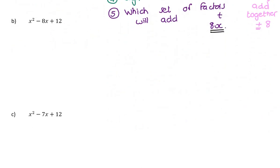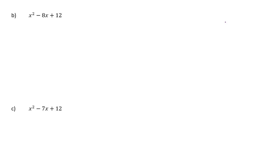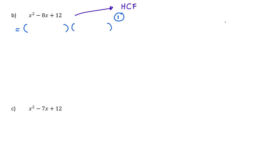I multiply out in my head to check: x squared minus 6x minus 2x gives minus 8x in the middle, and minus times minus is plus, so plus 12 at the end. These two examples are very similar — they've got exactly the same numbers, it's just the middle term that's negative, so both factors in B end up being negative. Let's try x squared minus 7x plus 12. No highest common factor; this is a binomial times a binomial. The first term is obvious — x must come from x times x.